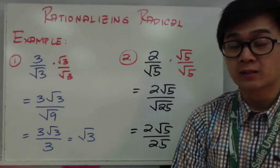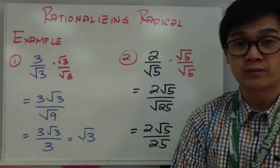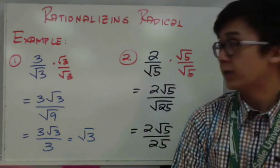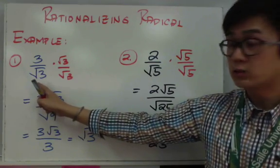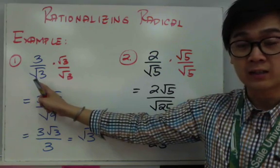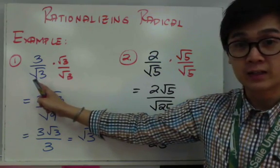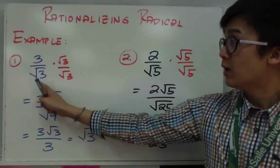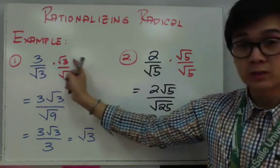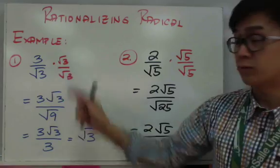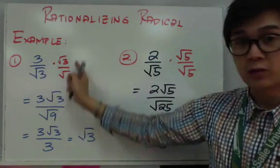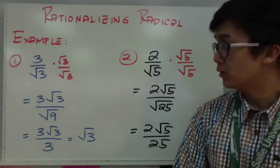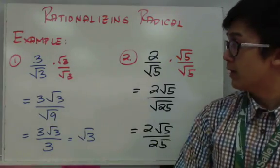The goal of rationalizing a fraction is to get rid of the radical symbol or square root in your denominator. For example, meron tayong 3 over square root of 3. Kailangan natin siyang i-rationalize at kailangan natin matanggal yung radical symbol dun sa denominator. To do that, we multiply 3 over square root of 3 by square root of 3 over square root of 3. Kung ano yung radical number dito sa denominator, yun yung gagawin mong factor para ma-eliminate yung radical symbol.